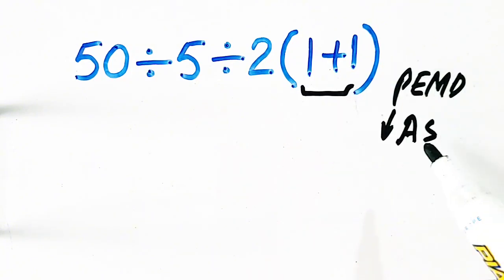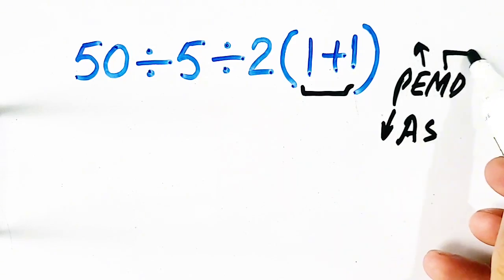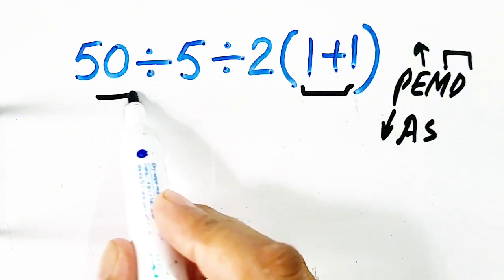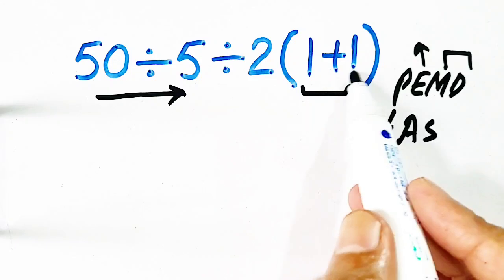yes, which is in this question, then exponent, which is missing, then multiplication and division both have same priority. So, let us first solve parenthesis.